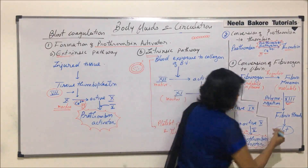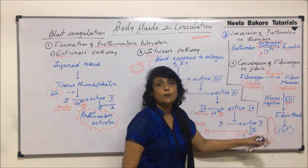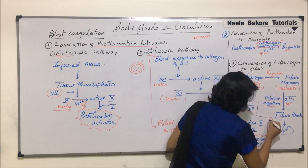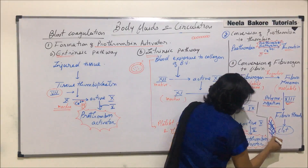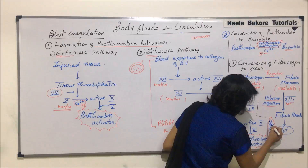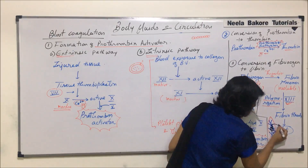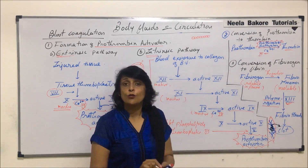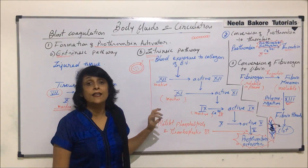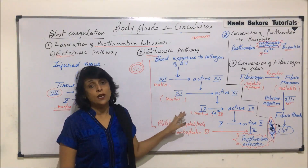When we talk about clotting — if this is the blood vessel where there is an injury — the fibrin threads form a network. In this network, the damaged cells, RBCs, and WBCs get blocked, and this results in the formation of a clot, which is also known as a thrombus. This is the detailed process and here we can see all the different factors which are involved.